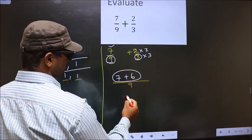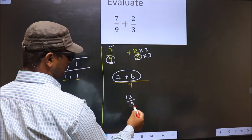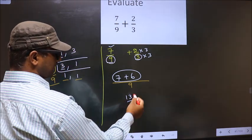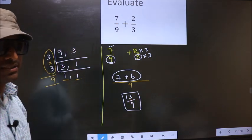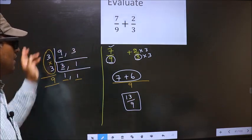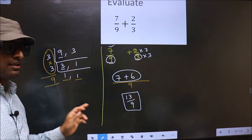Now 7 plus 6 is 13 by 9. We cannot simplify this fraction. So this is our answer. Am I clear?